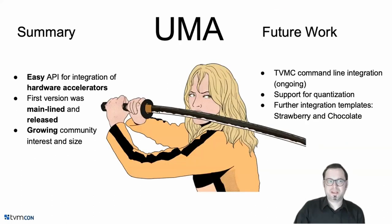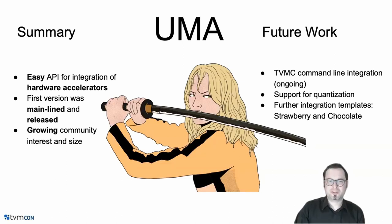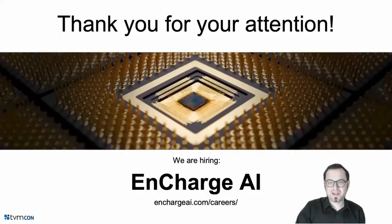And that's already the end of this lightning talk. Let me summarize the most important points: UMA is an easy API for integrating your hardware accelerator into TVM. It has recently been mainlined and added to the TVM release, and has a rapidly growing community with a lot of interest and more and more people who participate. For the future, new features are planned like the ongoing TVMC command line integration, support for quantization, and the update of further integration templates like the strawberry and chocolate demo accelerators. Thank you very much for your attention. And as a side note, if these kinds of topics are interesting for you — like AI compilers or hardware — check out the NCharge AI website; we are hiring.